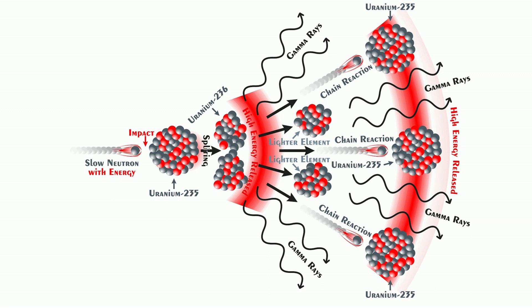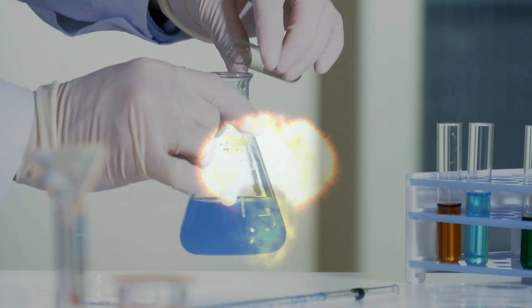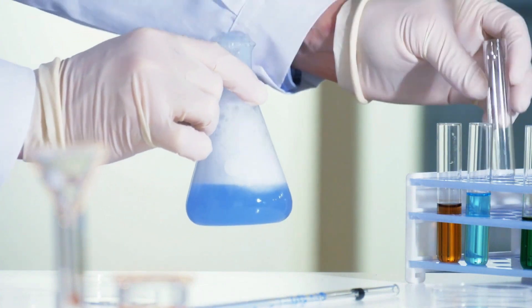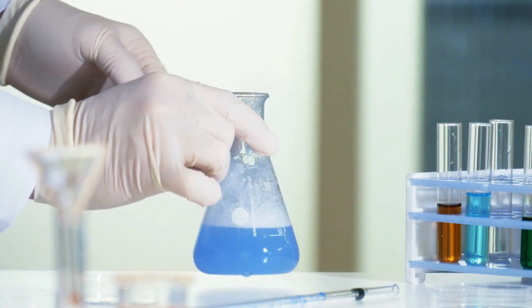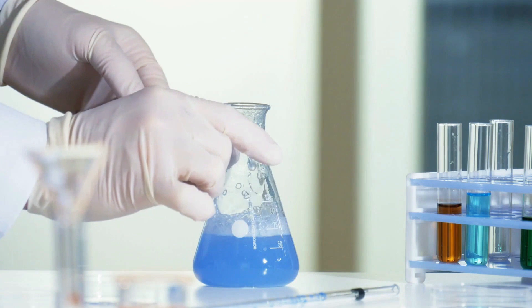gamma rays, and energy. These new neutrons then strike other uranium-235 atoms, which repeat this process, and this can set off a chain reaction. The energy given off is much greater than a chemical reaction, which makes it a very dense source of energy, but less than nuclear fusion.